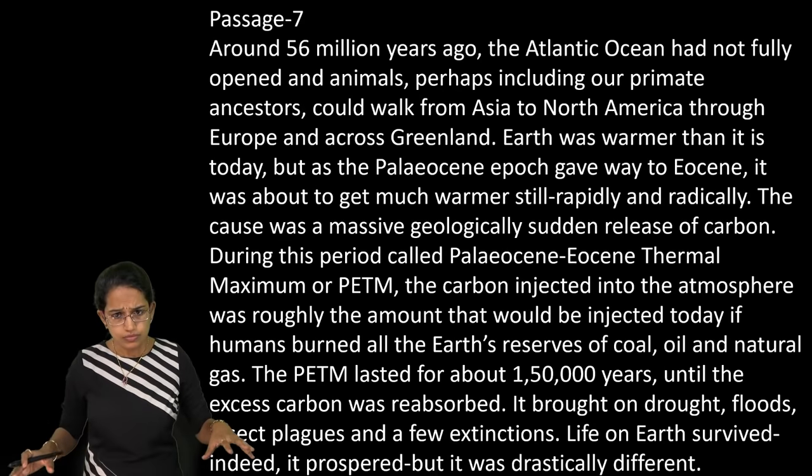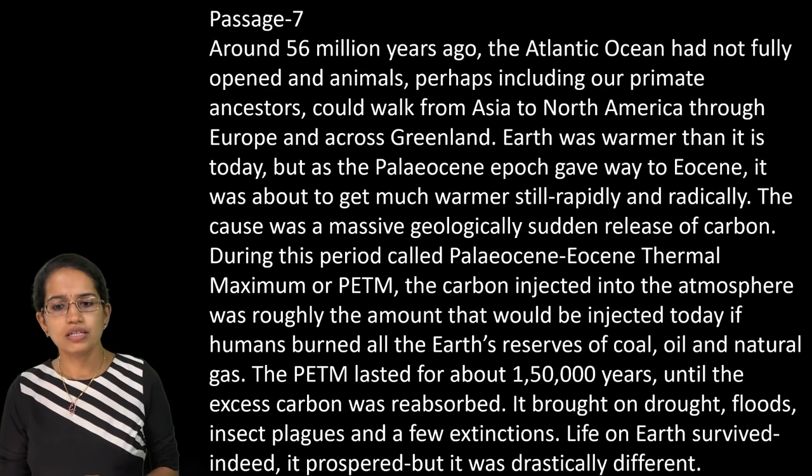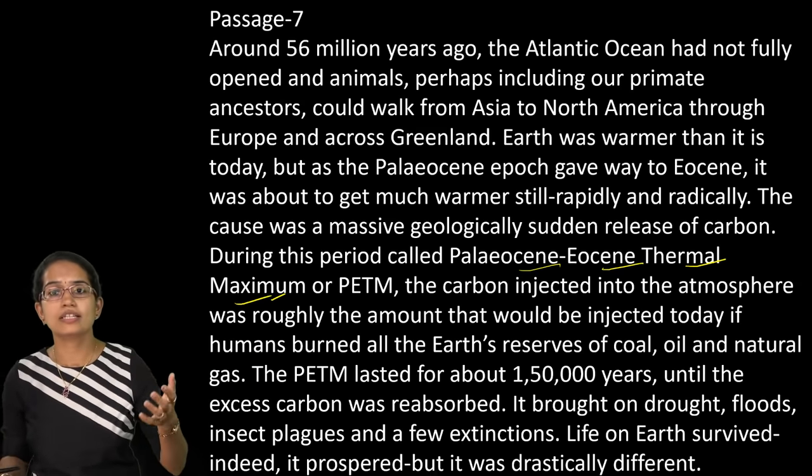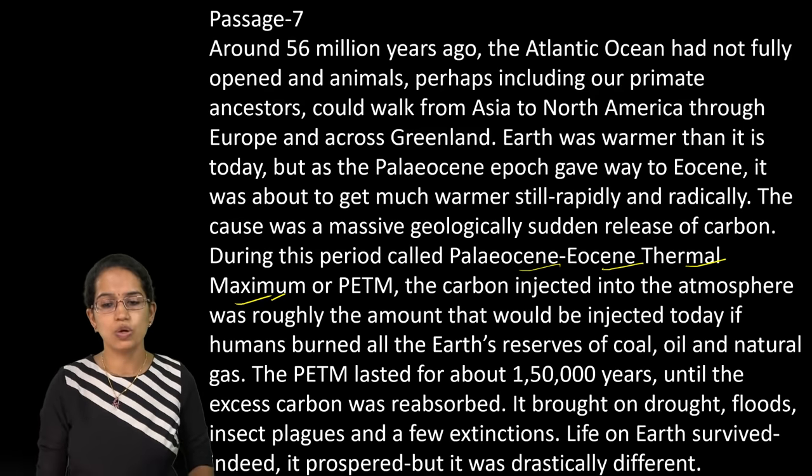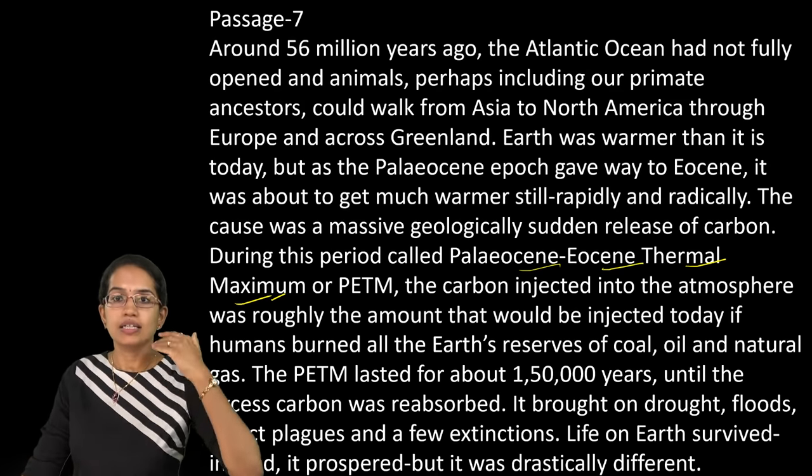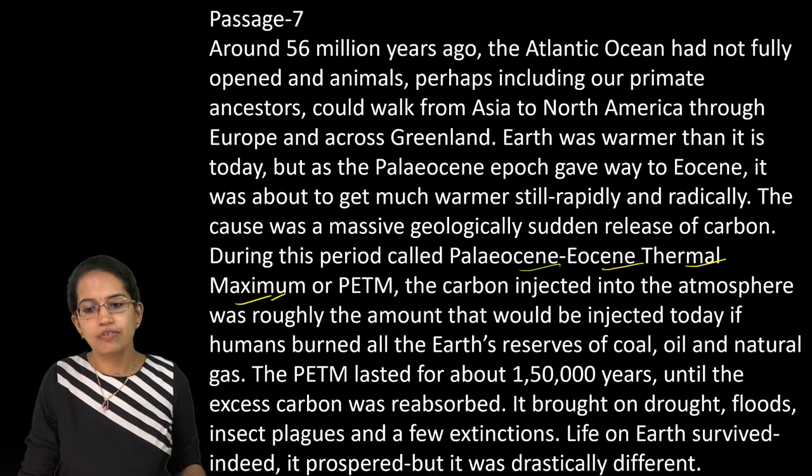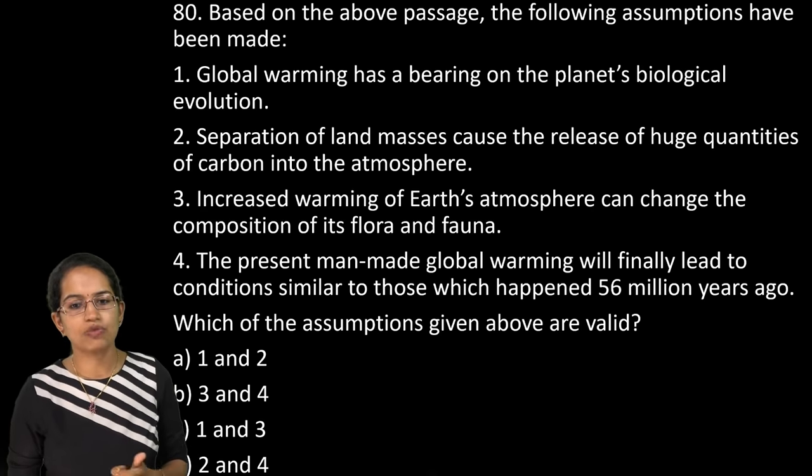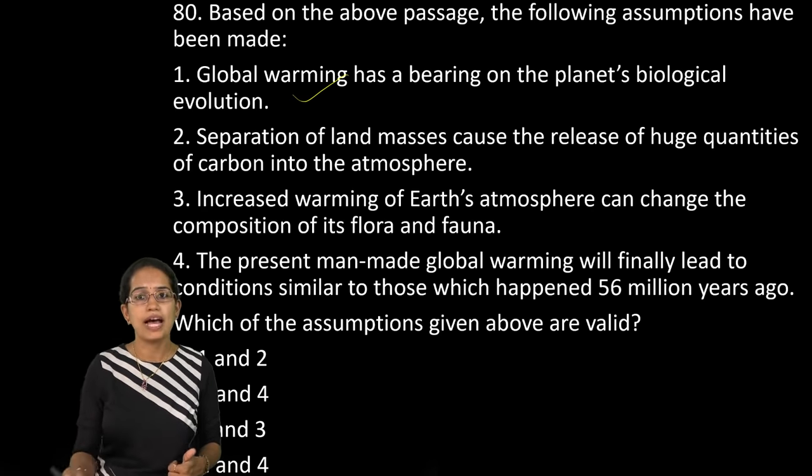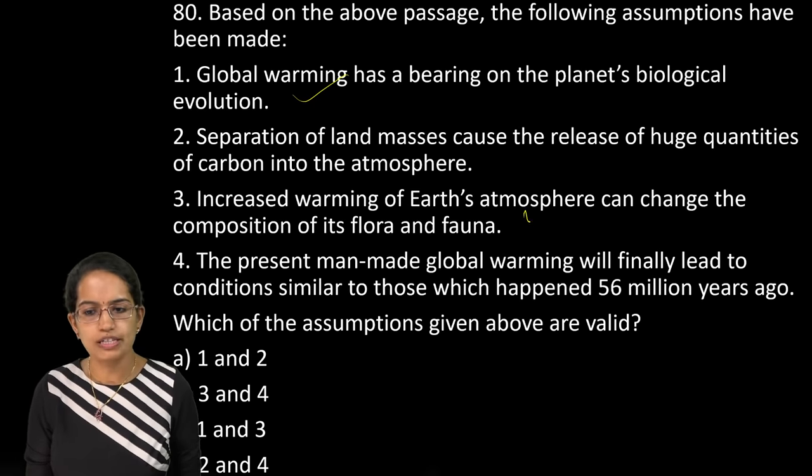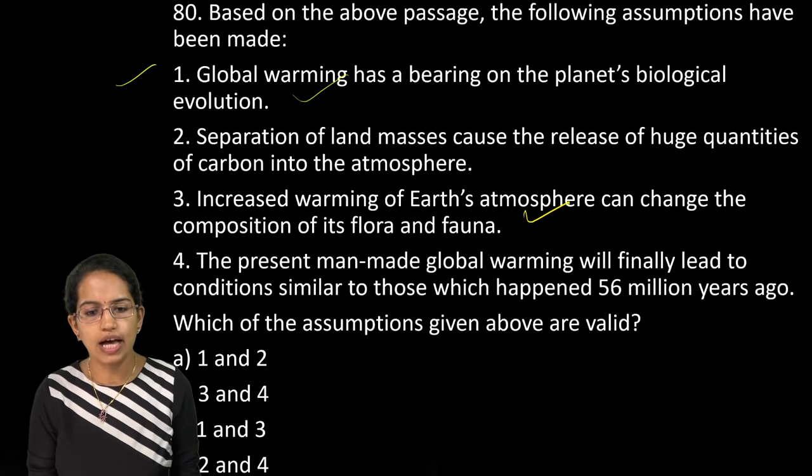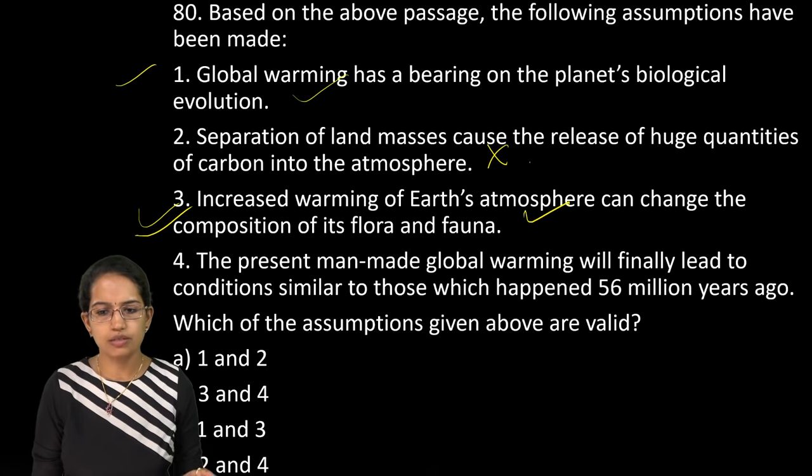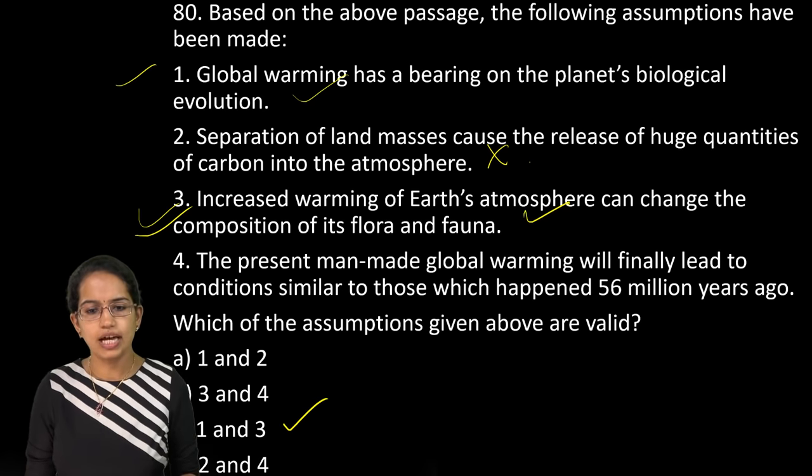The last question is about the warming that took place under the paleocene eocene thermal maximum period. During this time the carbon injected into the atmosphere was more than the total burning of the coal, oil, natural gas present in today's world. So that time until and unless the released carbon was reabsorbed the things could not be brought to life. So it could be brought on droughts, floods or extinction cases that could be seen. So what could be explained from the above passage. So from the above passage we can say global warming has a bearing on the planet's biological evolution. Also higher warming of the atmosphere can change the composition of flora and fauna. So 1 and 3 become the right explanation. The passage 2 does not say that the release was due to the separation. So this becomes the incorrect statement and therefore you have 1 and 3 as the right option.